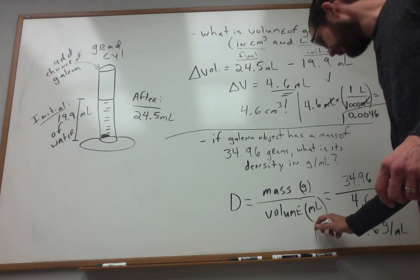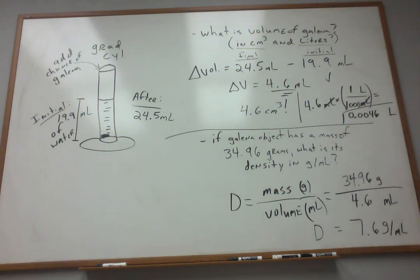Looks like the answer I get is 7.6 grams per milliliter or grams per cubic centimeter. Remember, that's the same. So the density of this object, which is an intrinsic property of galena, is 7.6 grams per milliliter.